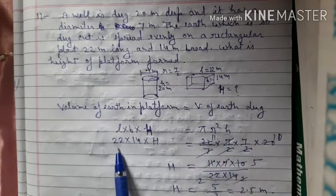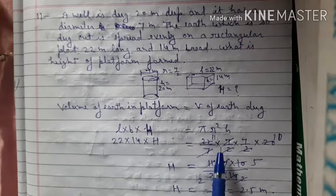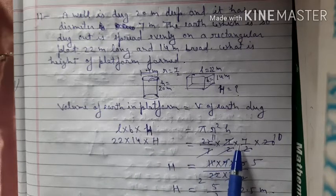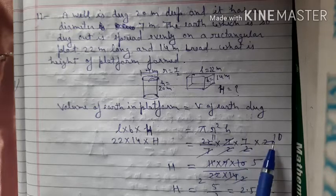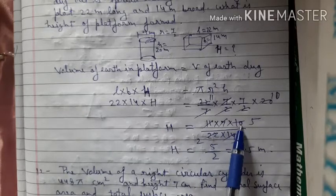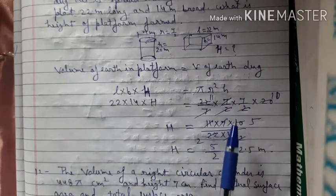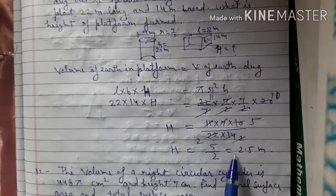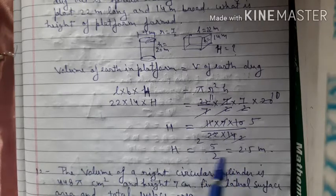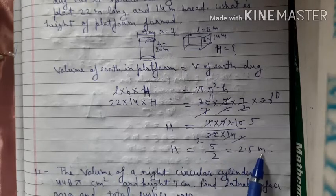Setting up: l × b × h = π r² h_well. So 22 × 14 × h = (22/7) × (7/2) × (7/2) × 20. Simplifying: h = (11 × 7 × 10) / (22 × 14) = 5/2 = 2.5 meter. Therefore height of the platform is 2.5 meter.